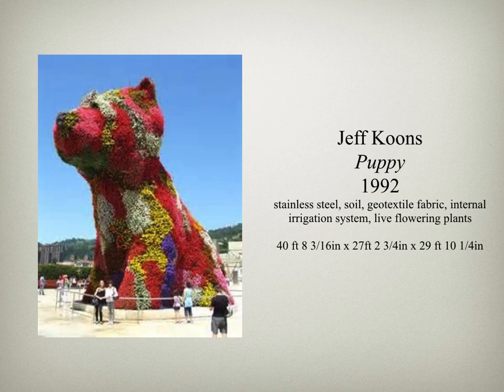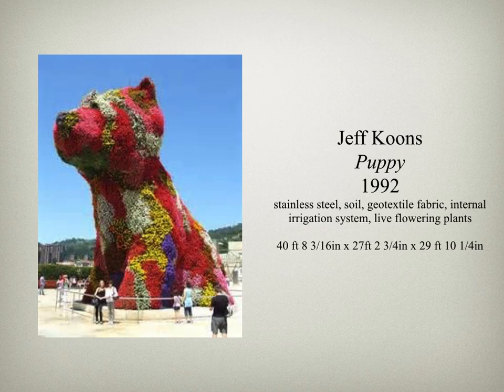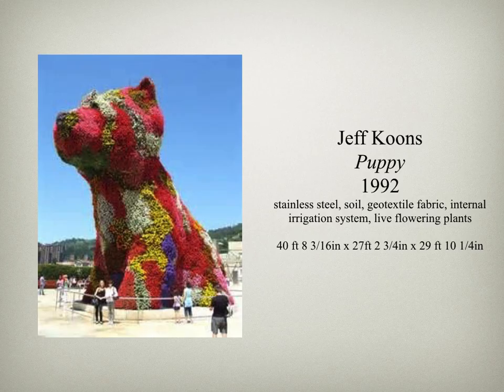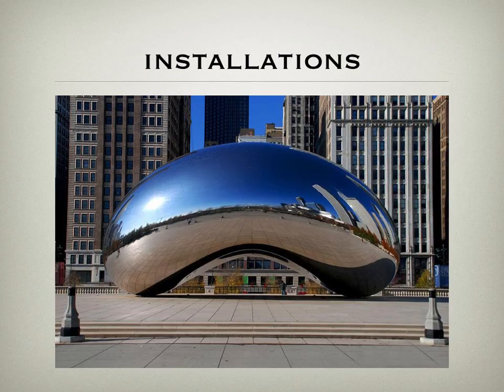Another example of a built work is Puppy by Jeff Koons from 1992, made of stainless steel, soil, geotextile fabric, an internal irrigation system, and live flowering plants. It was installed in front of the Guggenheim Museum in Bilbao, Spain. This work develops over time — kind of like a giant chia pet. When first created you didn't see the flowers, but as time went on the flowers grew and bloomed to create the puppy we see now.